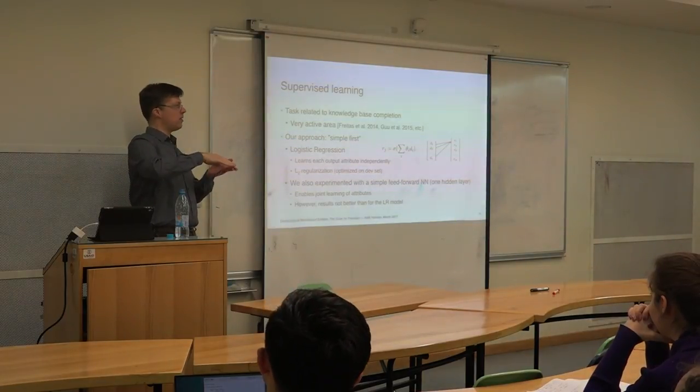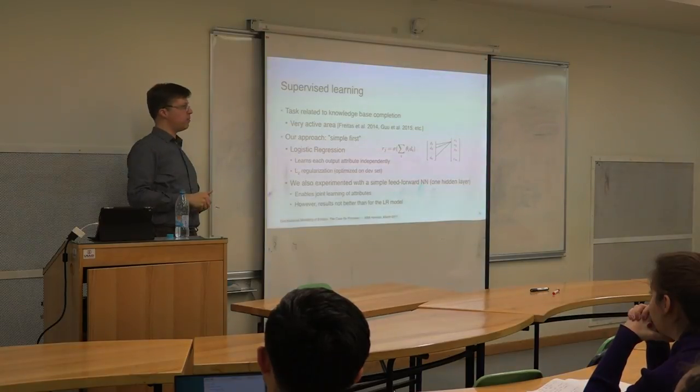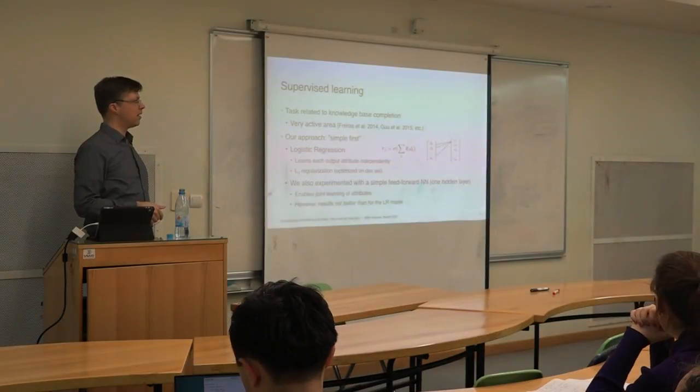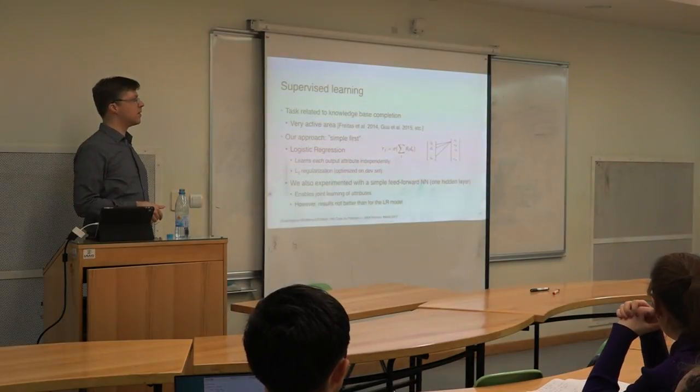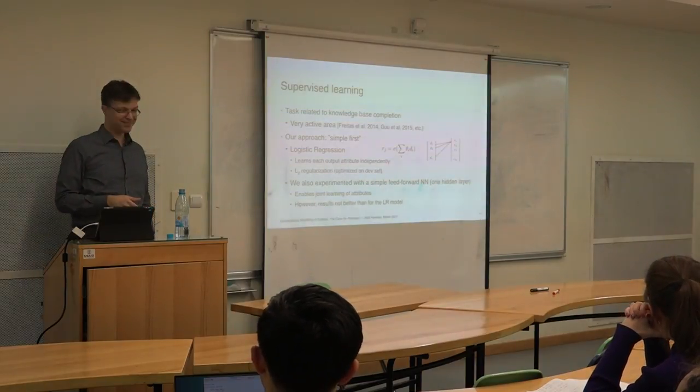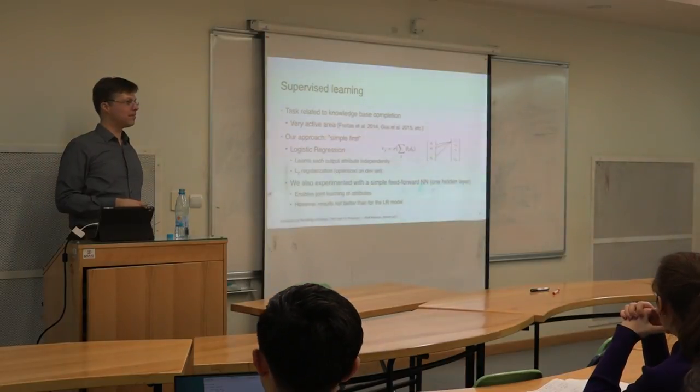But essentially it's a Zipf distribution, so you have attributes that you have for every country, but for almost all attributes you just have missing values for many countries. It's all about how to predict the missing values, yes, for many entity types and missing values.